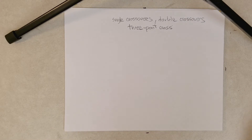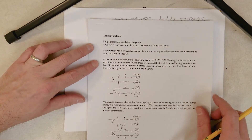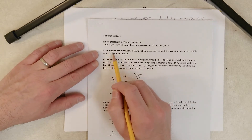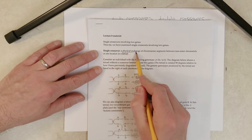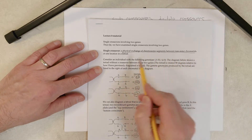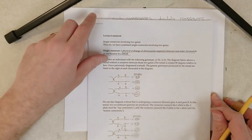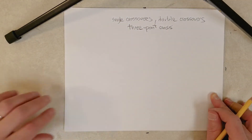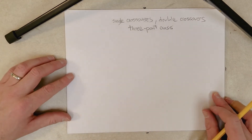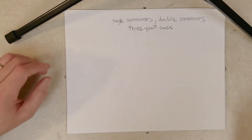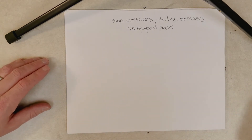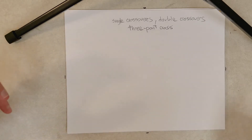So to start, instead of writing out the whole definition, here we have a definition of a single crossover: a physical exchange of chromosome segments between two non-sister chromatids at one location in a tetrad. I have a neat way I like to diagram these, which helps explain single crossovers and double crossovers, and is useful when we get to the three-point cross because it helps you see where the different classes of recombinant gametes are coming from.